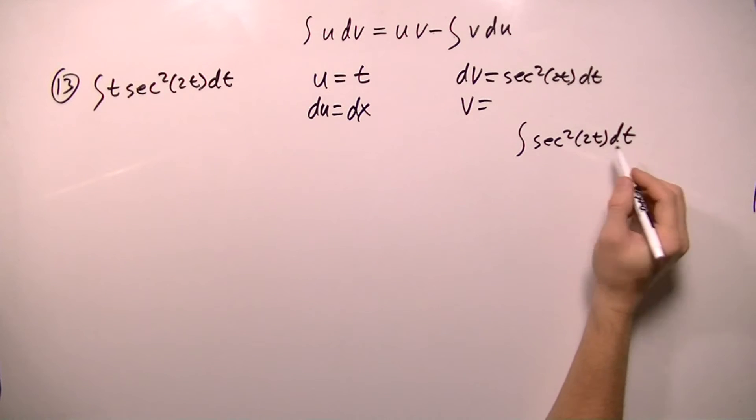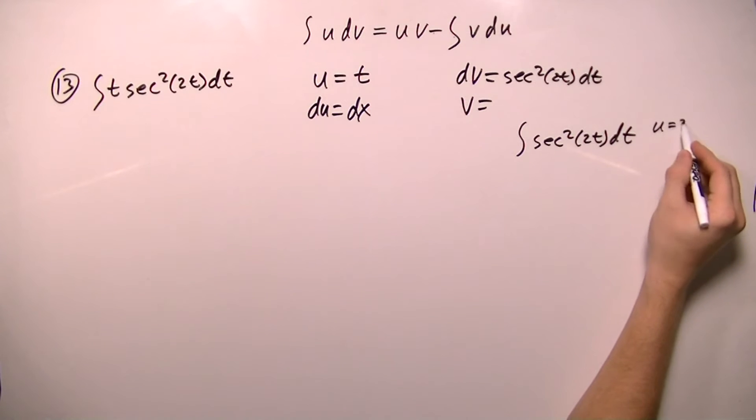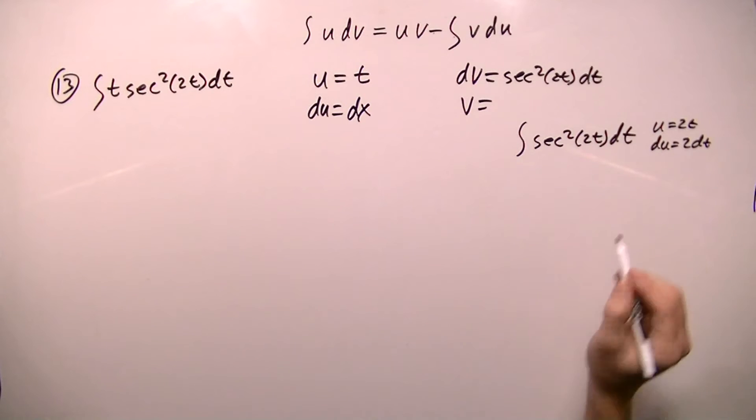And in order to find this integral, I'm just going to have to make a substitution that u equals 2t. So that du equals 2 dt. And if I divide both sides by 2, I get du over 2 equals dt.